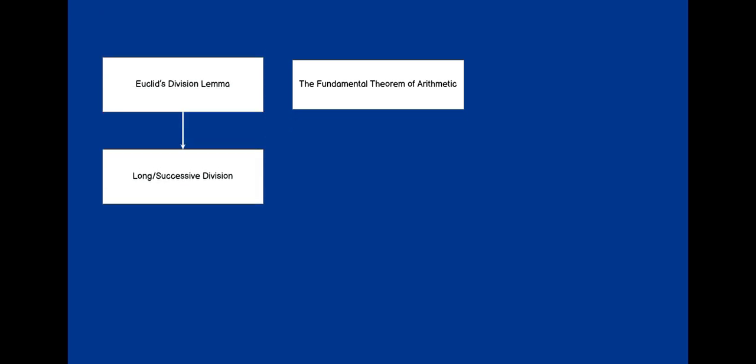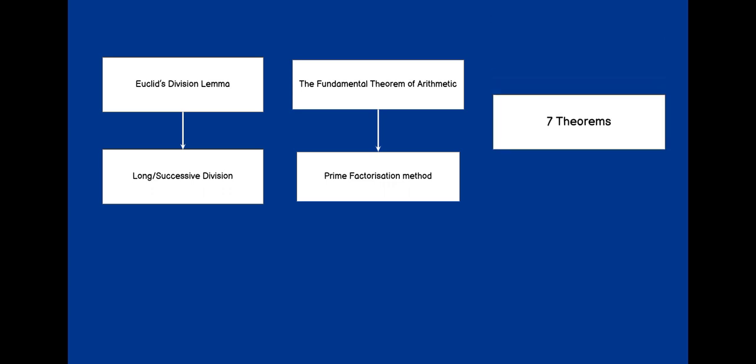Real Numbers Class 10th Part 1. In this chapter we'll learn about Euclid's Division Lemma and the Fundamental Theorem of Arithmetic. Euclid's Division Lemma means long or successive division. The Fundamental Theorem of Arithmetic means the prime factorization method. We'll also learn 7 different theorems in this chapter.